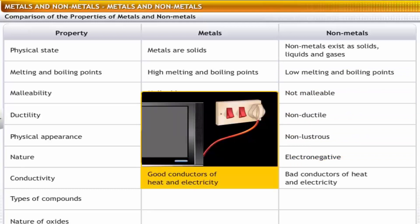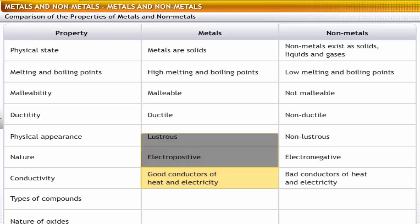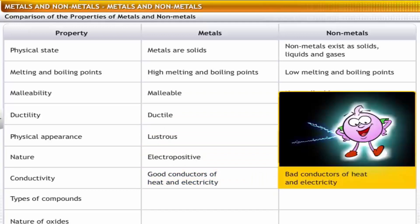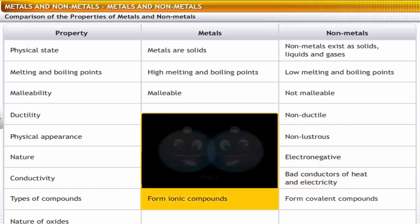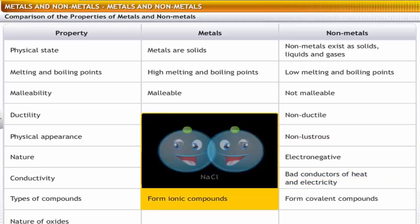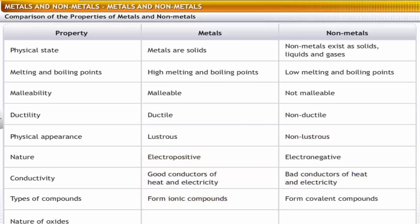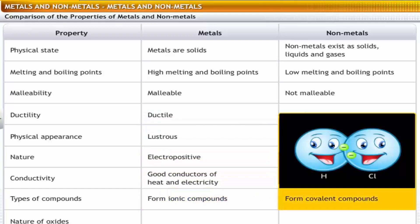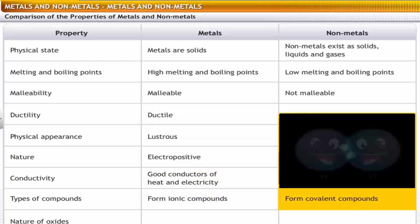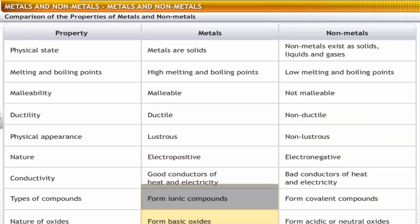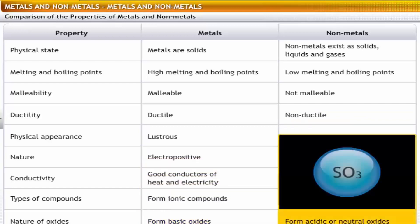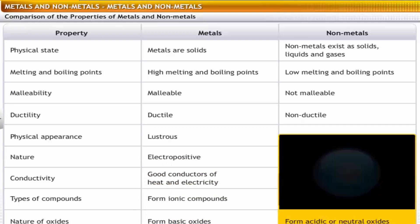Metals are good conductors of heat and electricity, while non-metals are bad conductors of heat and electricity. Metals form ionic compounds, while non-metals form covalent compounds. Metals form basic oxides, while non-metals form acidic or neutral oxides.